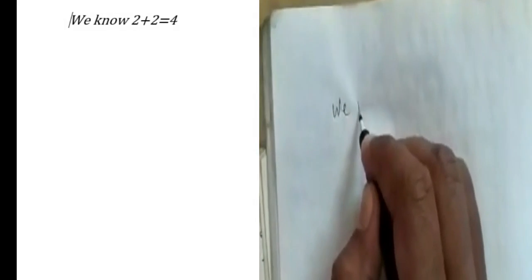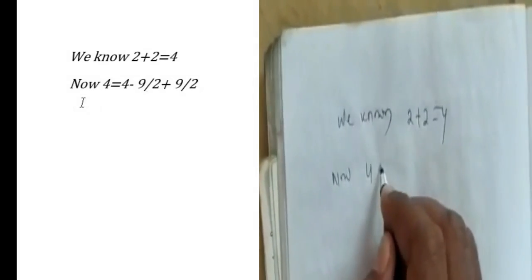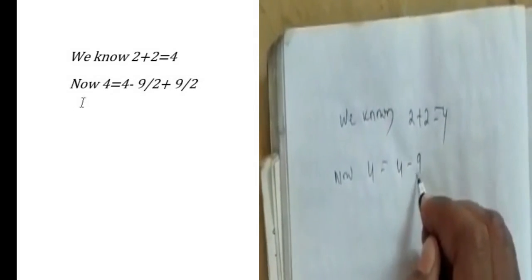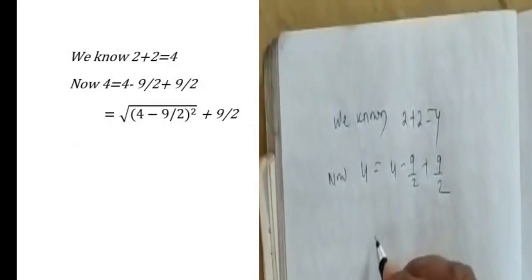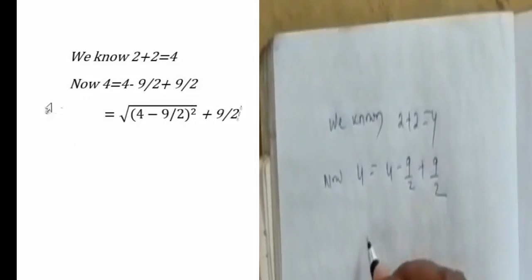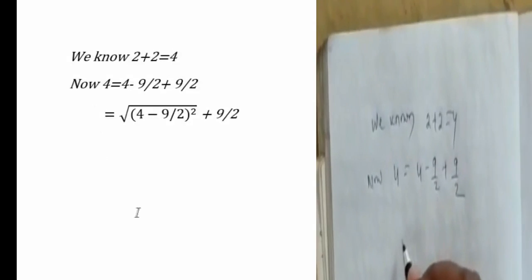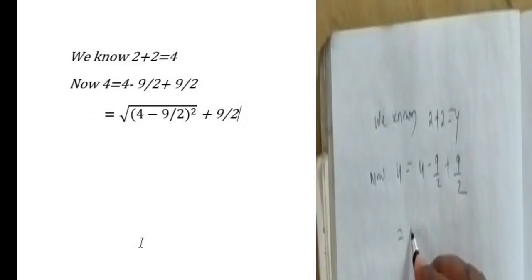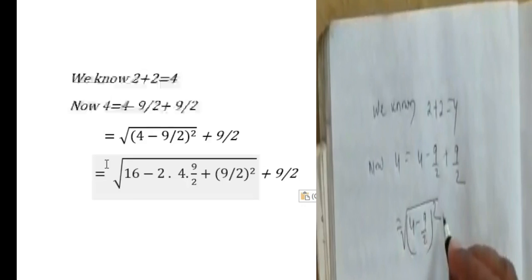We know 2 plus 2 is equal to 4. Now, 4 is equal to 4 minus 9 by 2 plus 9 by 2, equal to 4 minus 9 by 2 whole square equal to 4 minus 9 by 2 whole square root of 1 plus 9 by 2.